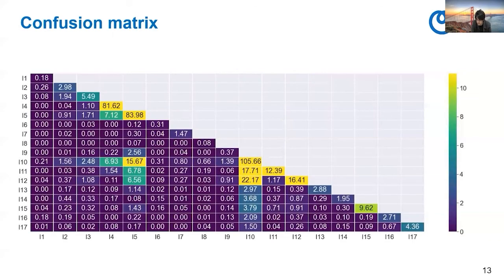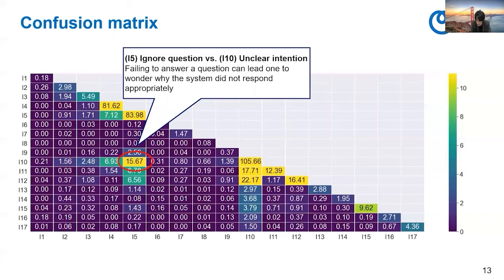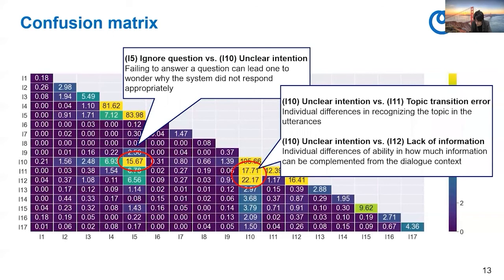Looking at the confusion matrix, there are some areas of confusion. For example, there is confusion between I5 ignored question versus I10 unclear intention. This may be because failing to answer a question can lead one to wonder why the system did not respond appropriately. There is also confusion between I10 unclear intention versus I11 topic transition error, possibly due to individual differences in recognizing the topic. Additionally, there is confusion between I10 unclear intention versus I12 lack of information, due to individual differences in how much information can be inferred from context.